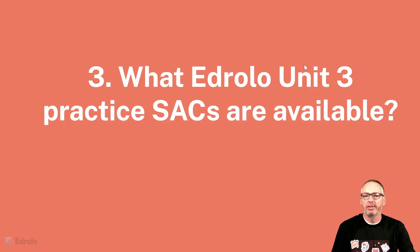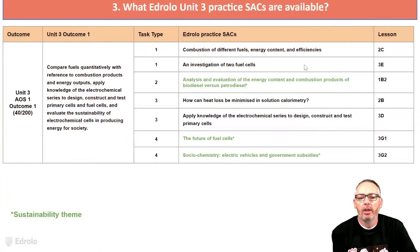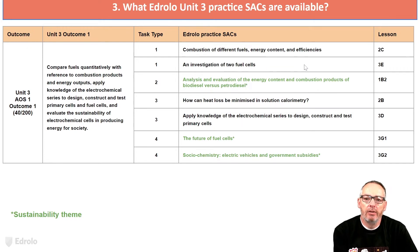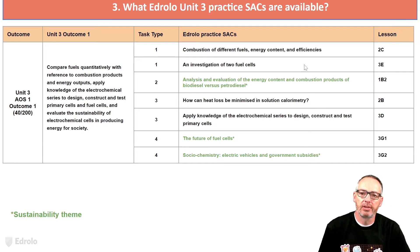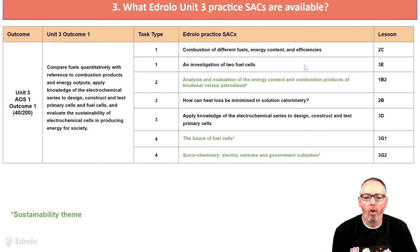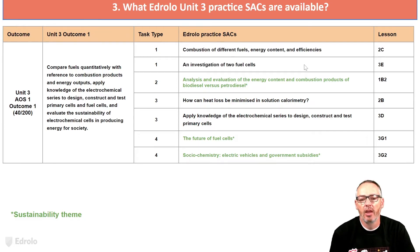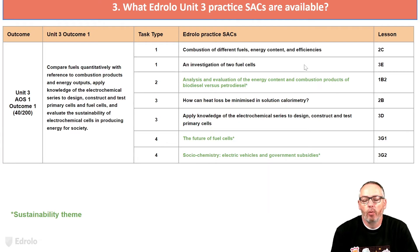What practice SACs are available for Unit 3? We've given you four, five, six different versions of each task type and spread them out throughout Units 3 and 4. Here are the examples of the Unit 3 practice SACs that are available online now. All of Area of Study 1 for Unit 3 is currently available. As you can see, the four task types are covered, with at least one — sometimes two — of each for this Area of Study.